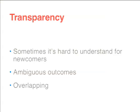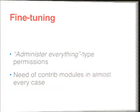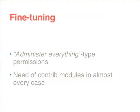One more big issue is the overlapping. Some permissions overlap with others. For example, administer content or administer users. And nothing indicates this overlapping on the UI. These administer-everything type permissions are the main sources of the overlapping problems. Many tasks need these powerful permissions, but they are too powerful and we don't want to grant these permissions to our users.